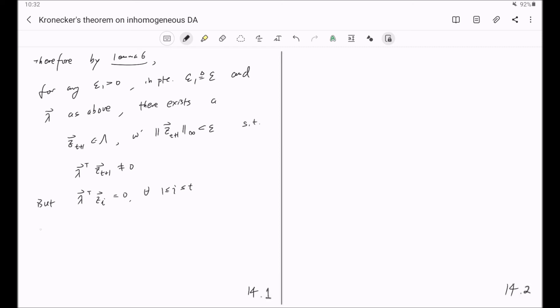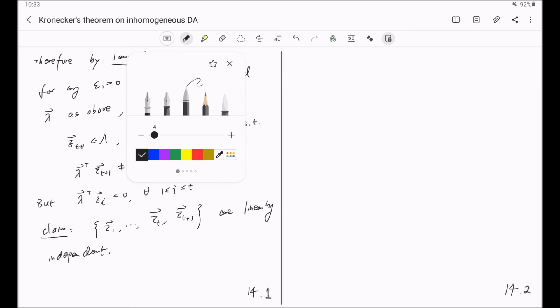Now we claim that the set of T plus 1 vectors Z1 through ZT together with ZT plus 1 are linearly independent. This should be obvious to you if you know linear algebra very well. So I will let you think about it, but I will give you a quick proof.